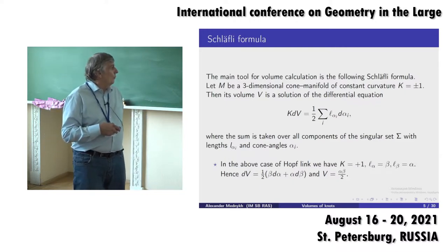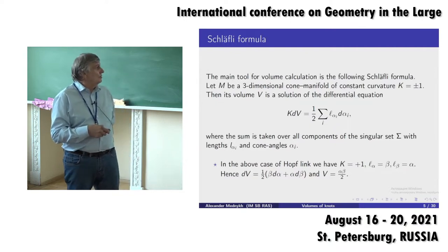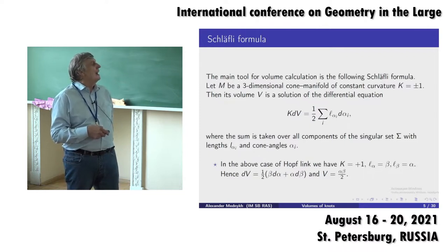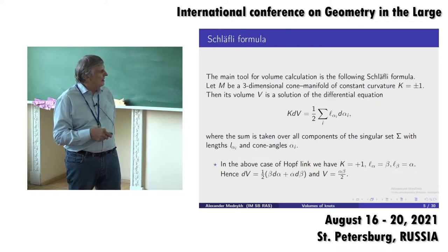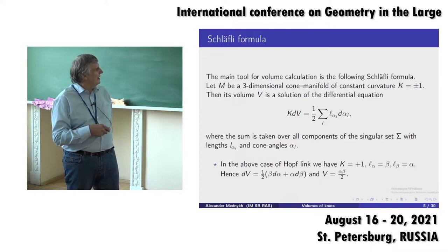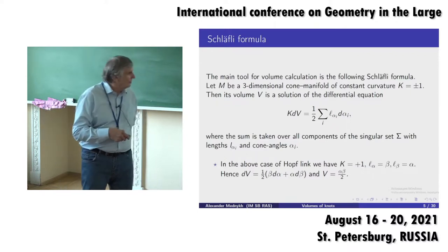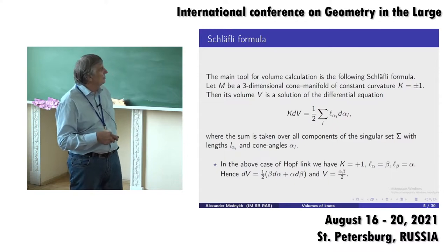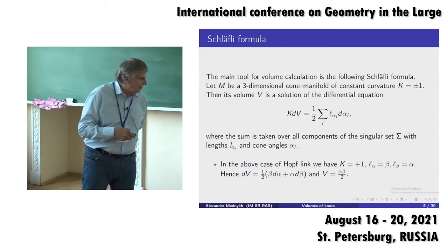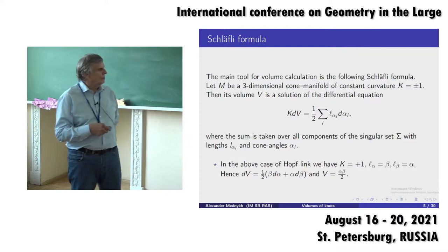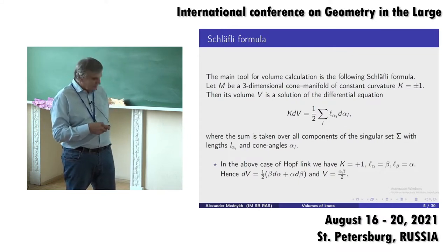In the above example of the Hopf link, fixing curvature equal to ±1, one can recognize from the picture that the edge labeled α has length β and the edge labeled β has length α. As a result, the Schlafli differential formula takes a very simple form. After integration and finding a suitable constant of integration, we obtain a simple volume formula — this is the first result for volume calculations of orbifolds modeled in spherical space.